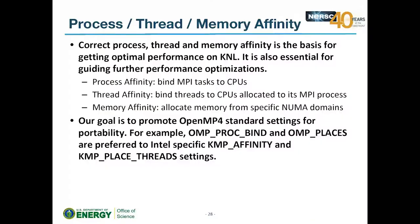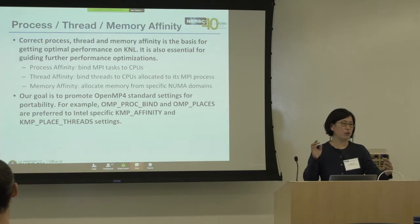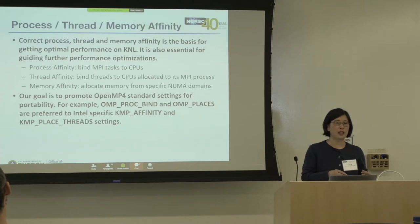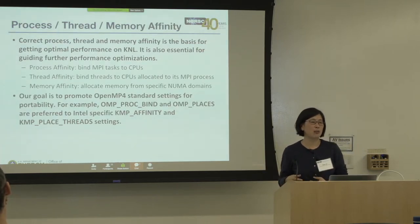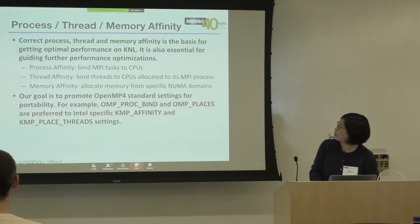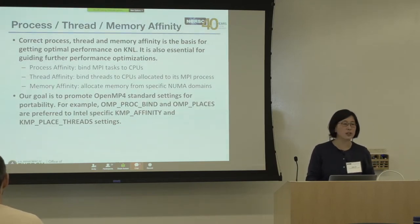The next part covers thread and process affinity, especially relevant for KNL with its 68 cores per node and one NUMA domain. CPU, process, and thread affinity are the basis for getting optimal performance. If multiple tasks or threads land on the same core, it hurts performance badly. Our goal is to use OpenMP standard settings rather than Intel-specific settings.